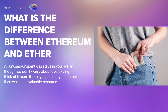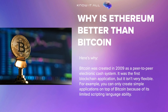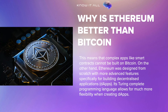Why is Ethereum better than Bitcoin? When it comes to cryptocurrency, there is no one-size-fits-all solution. Each digital currency has its own advantages and disadvantages. However, if we had to pick one winner between Bitcoin and Ethereum, then Ethereum would be the clear choice. Bitcoin was created in 2009 as a peer-to-peer electronic cash system. It was the first blockchain application, but it isn't very flexible. You can only create simple applications on top of Bitcoin because of its limited scripting language ability, meaning complex apps like smart contracts cannot be built on Bitcoin.